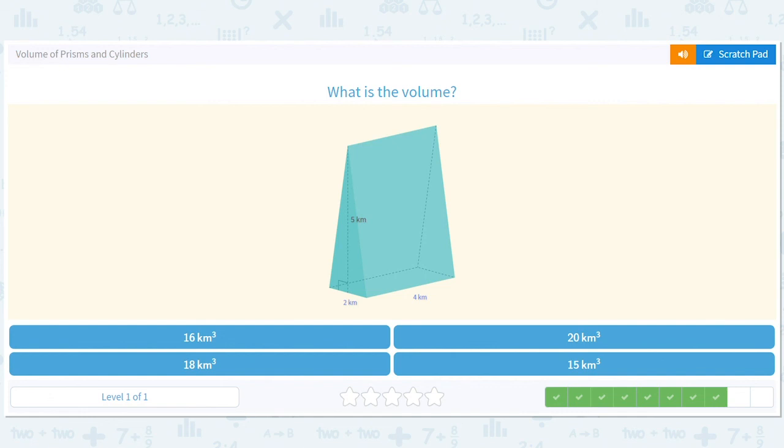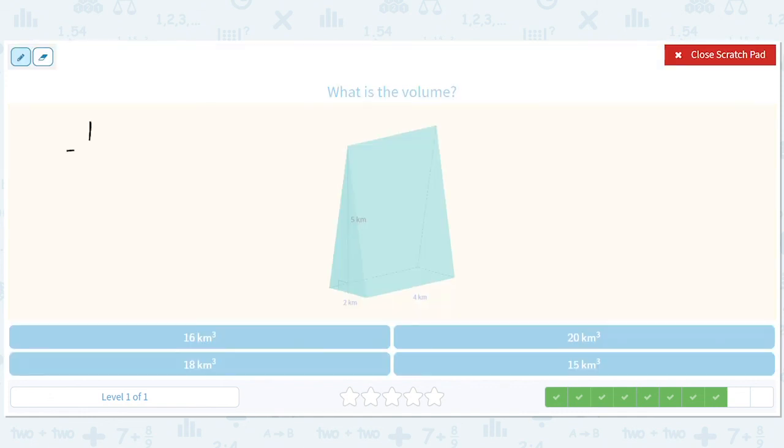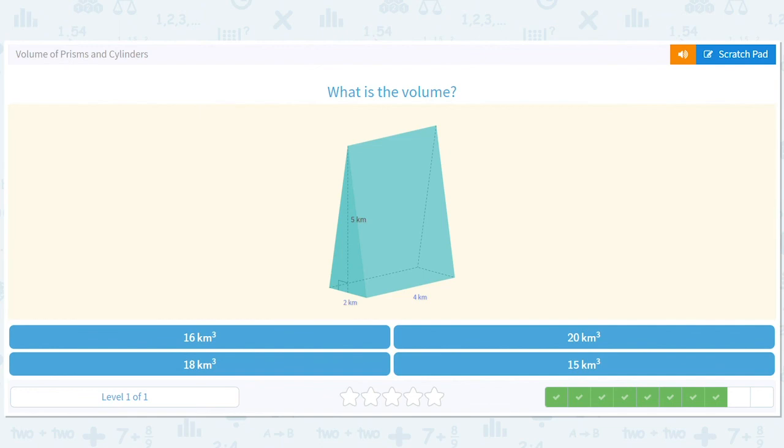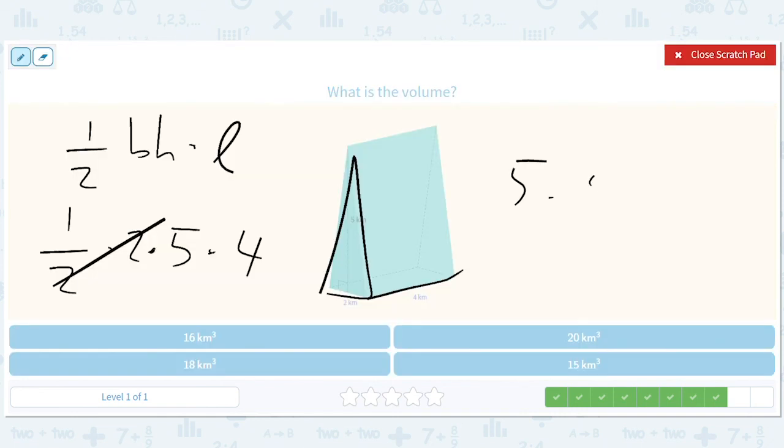Okay, so what was our formula? It was ½ base times height, where we're talking about this triangle, times the length. So the base here is 2. So ½ times 2 times 5 times 4. These cancel out. We should just get 20. The other way you can think about it, guys, is you can just be like, oh, it's basically just half a rectangular prism. So I just take the rectangular prism and I divide it by 2. So what do you do there? You just do 5 times 4 times 2 divided by 2. That's a shortcut. But I wanted to show you where it's coming from. So 20.